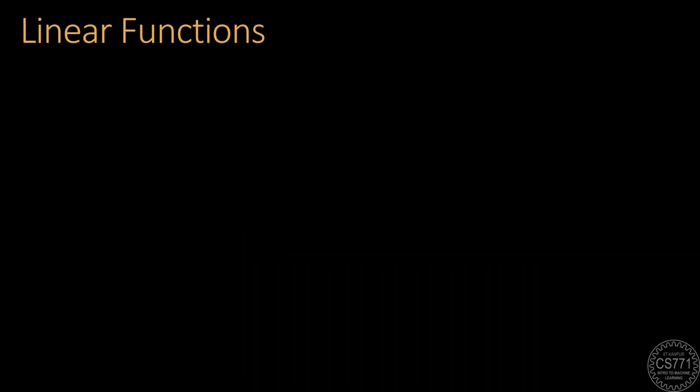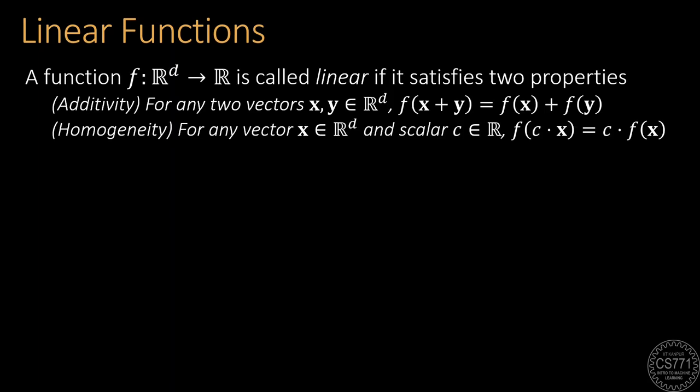Before we learn about non-linear models, it would be good to first renew our friendship with linear models. A function is called linear if it is additive and homogeneous. Specifically, the function value on the sum of two inputs must be equal to the sum of the function values on those two inputs individually. Also, the function value on a scaled input must be the same as taking the function value on the unscaled input and scaling it by the same amount.